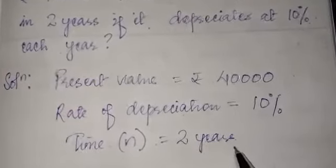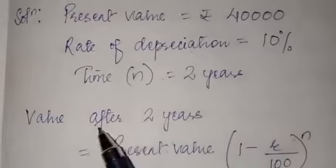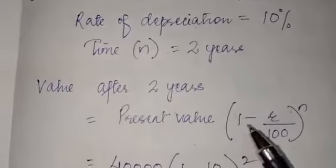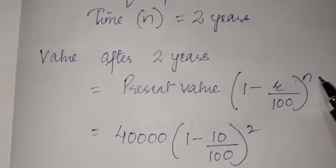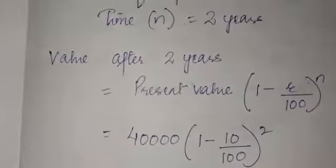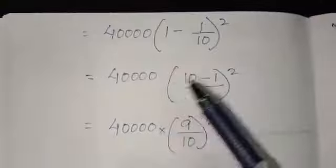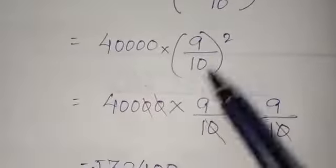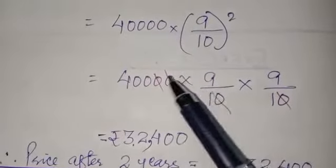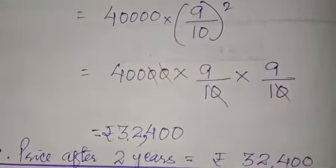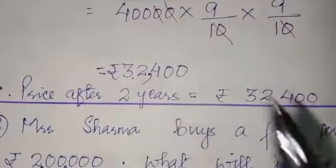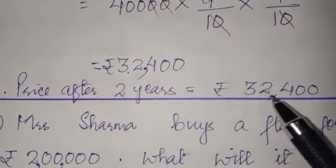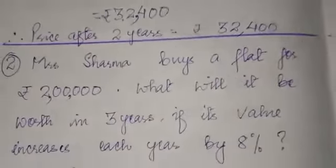Value after two years equals present value into 1 minus r by 100 to the power n, since it is depreciation. Put r as 10: 10 and 100 cancel to give 1 by 10, take LCM to get 9 by 10. Then 9 by 10 squared is 9 by 10 into 9 by 10, the zeros cancel, multiply and you get 32,400. So the value of that house after two years will be rupees 32,400.